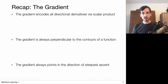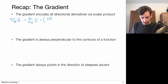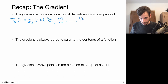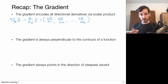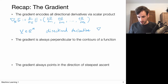First, the gradient encodes all directional derivatives via the scalar product. The derivative of the error E with respect to W is defined as a row vector — the derivative with respect to the first component, the second component, and so on. In our convention, the derivative is a row vector. Then the directional derivative along some direction V in R^M is simply given by the scalar product of the gradient row vector with that direction vector.